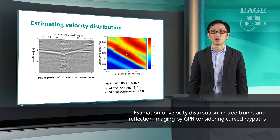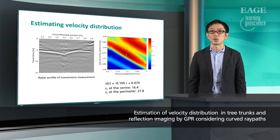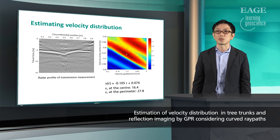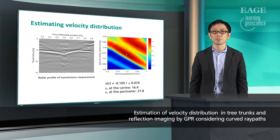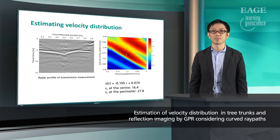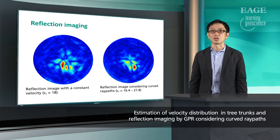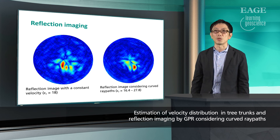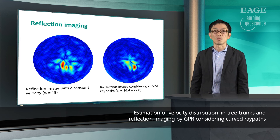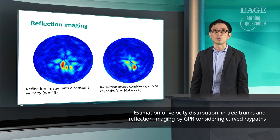In this velocity model, relative permittivity at the center is 16.4, and it is 27.8 at the perimeter. We then used the estimated velocity distribution in the reflection imaging. On the left, it is a result with a constant velocity. On the right, it is considering the curved ray path. We can see that the imaging of the hole is more focused if curved ray path and velocity distribution is taken into account.